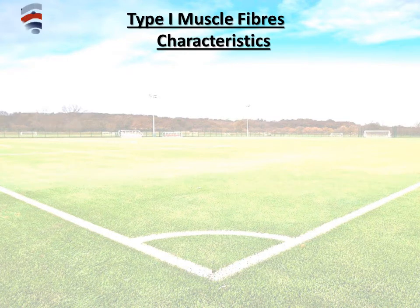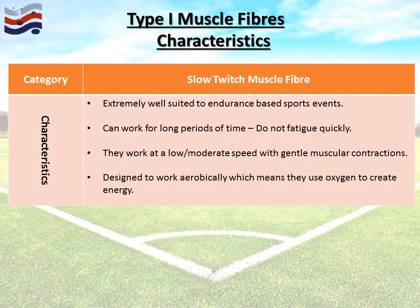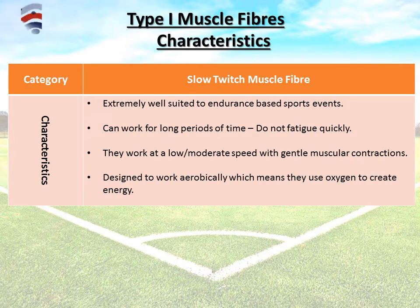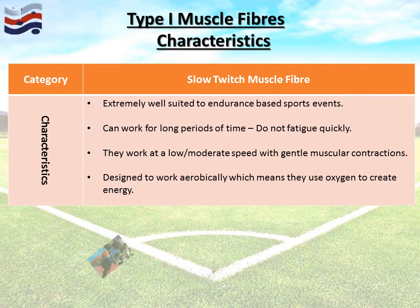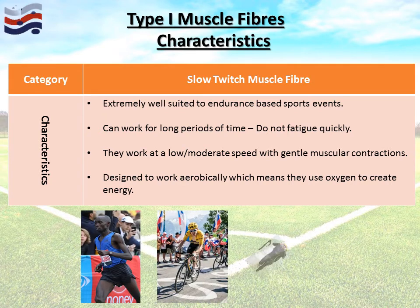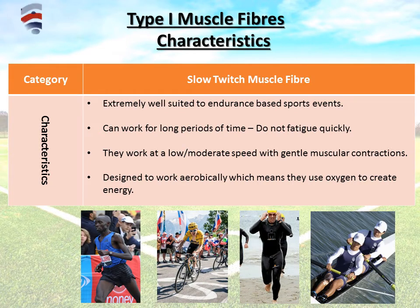Type one is categorised as a slow twitch muscle fibre. It's extremely well-suited to endurance events — it can work for long periods of time and doesn't fatigue quickly. It produces low to moderate speed with gentle muscular contractions, and is designed to work aerobically, meaning the athlete takes in oxygen and it's that oxygen that creates the energy. Sporting examples include marathon running, endurance cycling like the Tour de France, triathlons, and rowing.